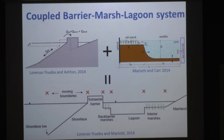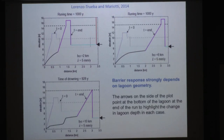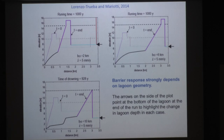We combined this marsh-lagoon model (three ODEs) with our barrier model (four ODEs) using an idealized geometry that now includes marsh-lagoon and lagoon-inland marsh boundaries. As a first step, we recovered results from Laura Moore and David Walters, who worked on this earlier. Their results suggest that marshes fill space in the back barrier environment and actually slow down the landward migration of barriers — something captured well by our coupled model.